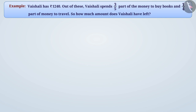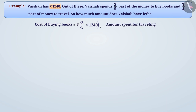Vaishali had a total amount of one thousand two hundred forty rupees. Out of which, Vaishali has spent three by fifth part for buying books. Hence, the cost of buying books is equal to three by five multiplied by one thousand two hundred forty rupees. Similarly, Vaishali has spent one by fourth part for travelling, so the amount spent for travelling is equal to one by four multiplied by one thousand two hundred forty rupees.